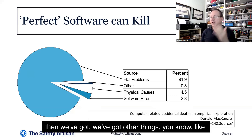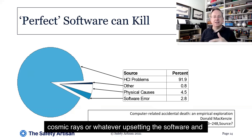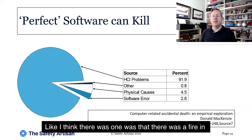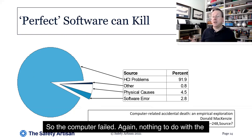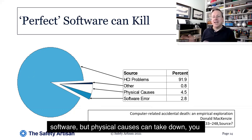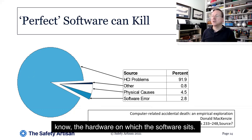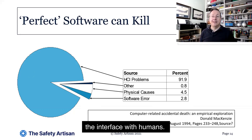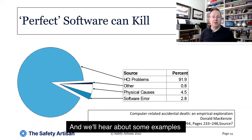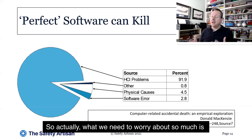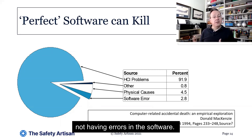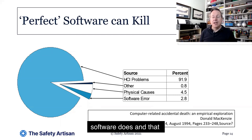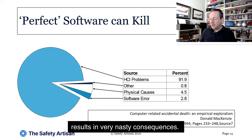Then we have other things like cosmic rays upsetting the software and hardware, or physical causes — for instance, a fire in the building where the computer was installed causing the computer to fail. Again, nothing to do with the software, but physical causes can take down the hardware on which the software sits. The vast majority of deaths were caused by problems with the interface with humans, and we'll hear about examples of those in a later session. What we need to worry about is not errors in the software so much as people misunderstanding what the software does — that results in very nasty consequences.